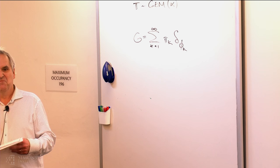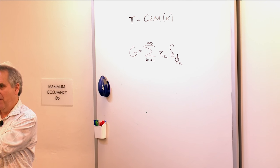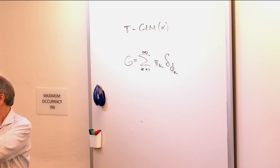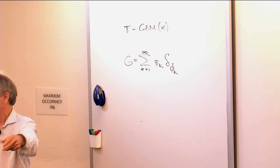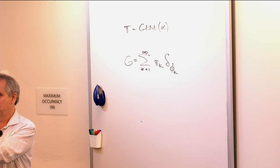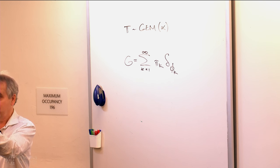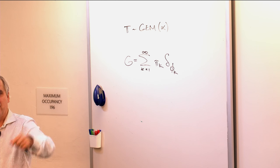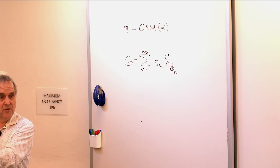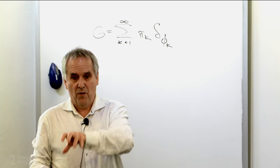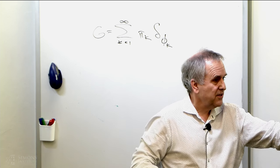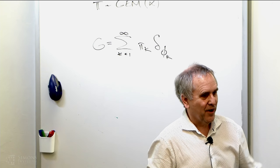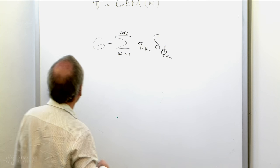Tamara went through the stick-breaking construction: you draw from beta(1, alpha), that gives you a number like 0.3, you take 0.3 as pi_1, and you have 0.7 of the stick left. You draw another beta and take a fraction — maybe 0.15, that's pi_2. You keep chewing away the stick. The numbers trend downward because there are infinitely many of them; you can't have epsilon everywhere and have them sum to 1. That's what GEM does.